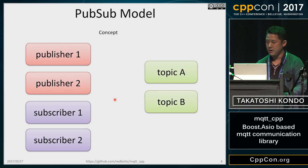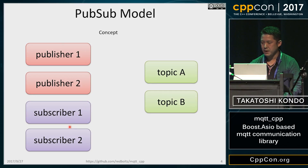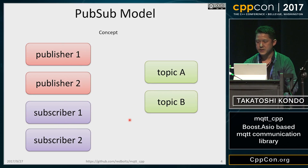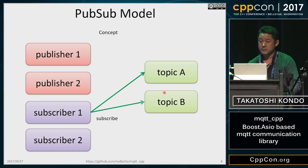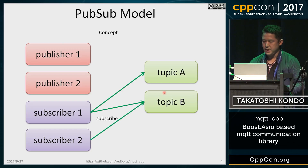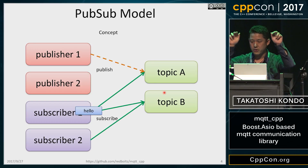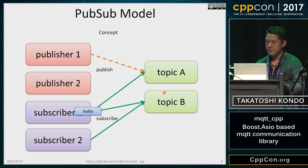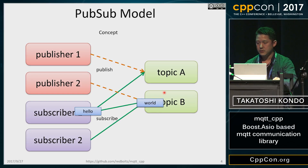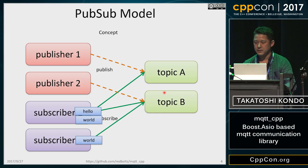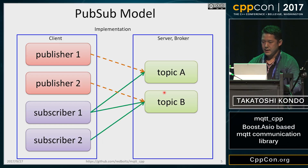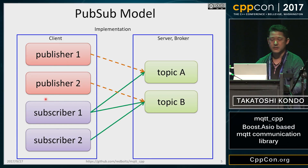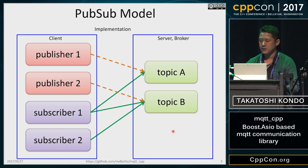Let me show you the concept of the PubSub model. We can use multiple subscribers, publishers, and topics. Subscribers can subscribe to any topics. For example, Subscriber 1 subscribes to Topic A and B. Subscriber 2 subscribes to Topic B. Publisher 1 publishes the message 'Hello' to Topic A, and the message is delivered to Subscriber 1. Publisher 2 publishes the message 'World' to Topic B — in this case, the message is delivered to both Subscriber 1 and 2. The left-hand side is implemented as client, and the right-hand side is implemented as server.